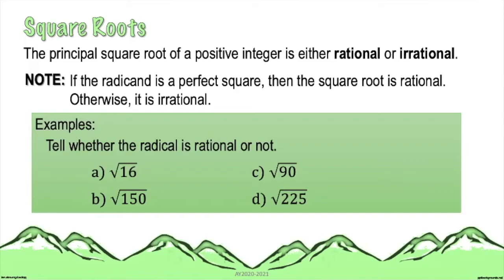For example, for letter A, square root of 16 — since 16 is a perfect square, the value of the square root of 16 would give you a rational number. For letter B, square root of 150 — the radicand is a non-perfect square, so the value of this radical would give you an irrational number.